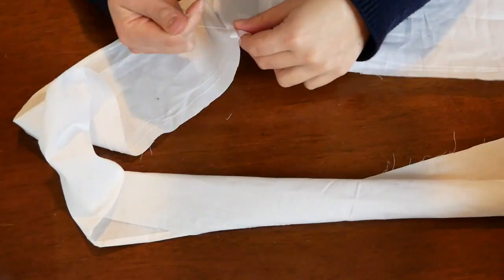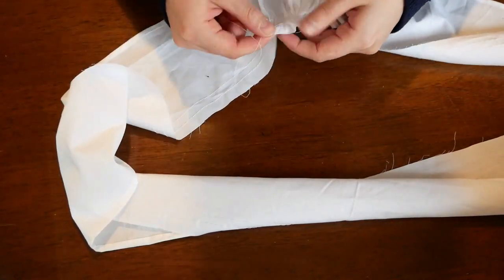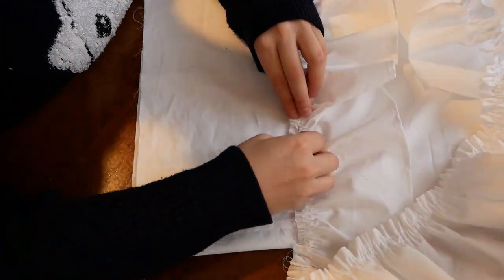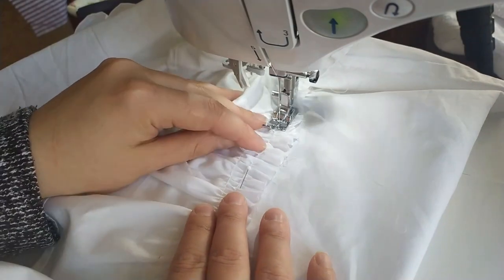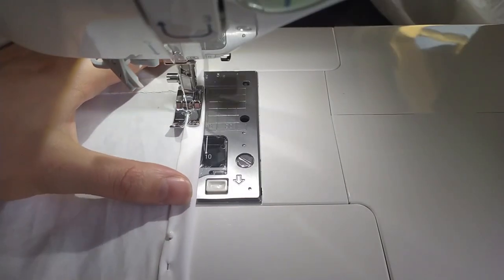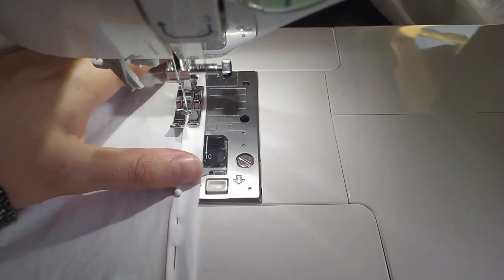Gather the top of the ruffle and pin the ruffle under the bottom edge of the lace, then sew it together on your sewing machine. Make a thin double folded hem on the bottom of the chemise.